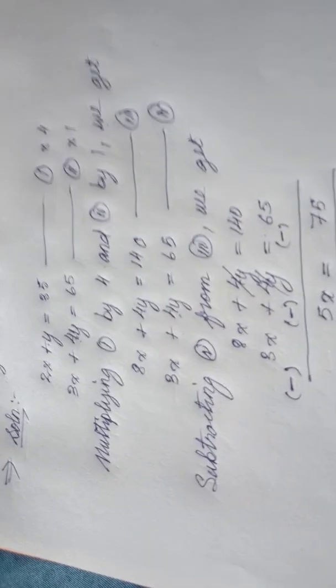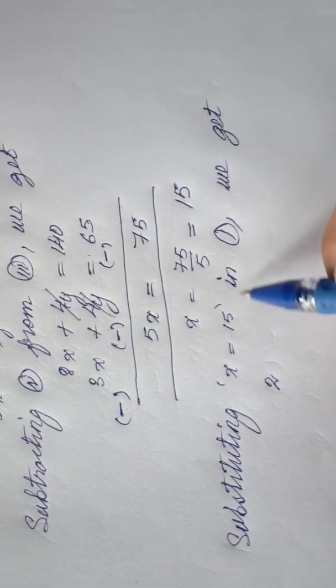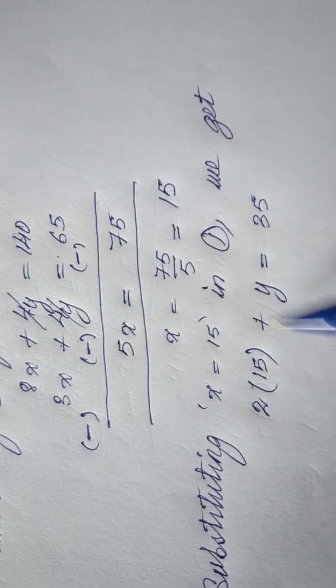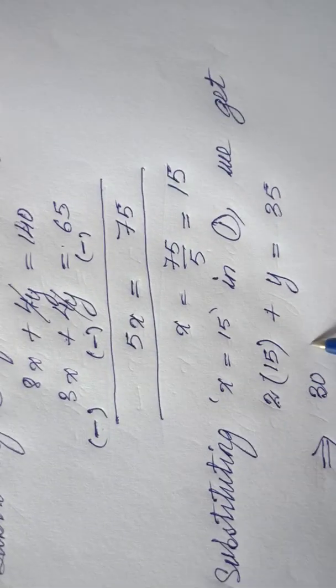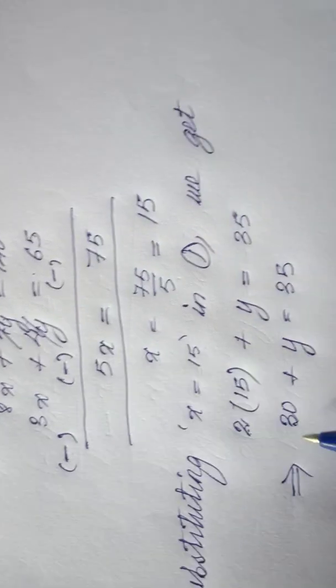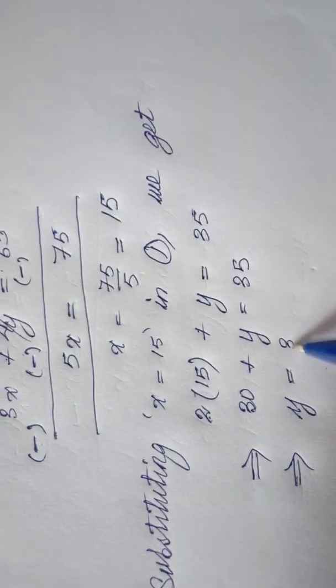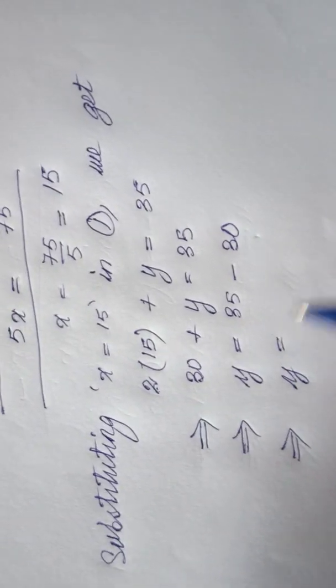We will substitute the value of x in equation 1. What is equation 1? 2x plus y equal to 35. So 2 times 15 plus y equal to 35. As you can see from this equation, now we have only unknown value is y, so I can easily find the value of y here. 2 times 15 is 30. 30 plus y is equal to 35. I have a constant term here, so I have to put this constant to the right-hand side. So y equals 35 minus 30, so the value of y becomes 5.